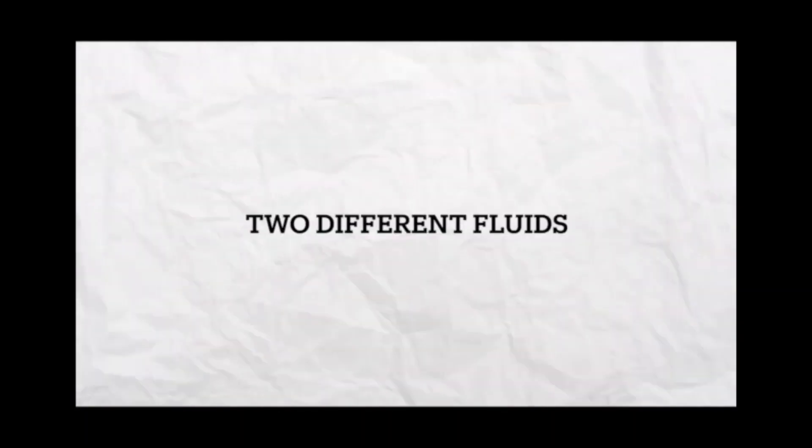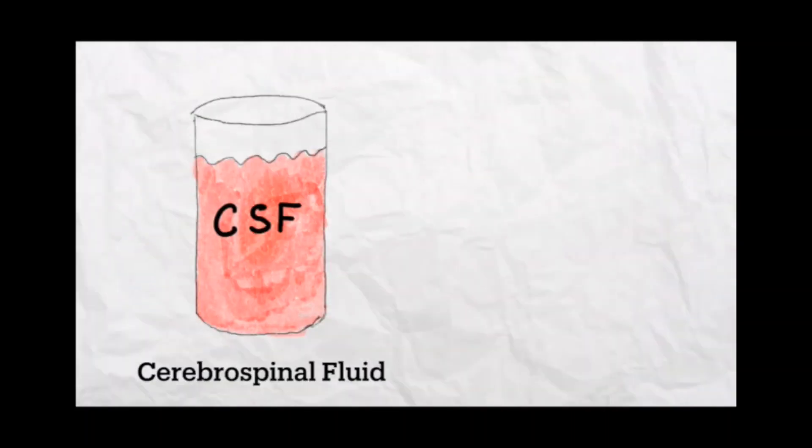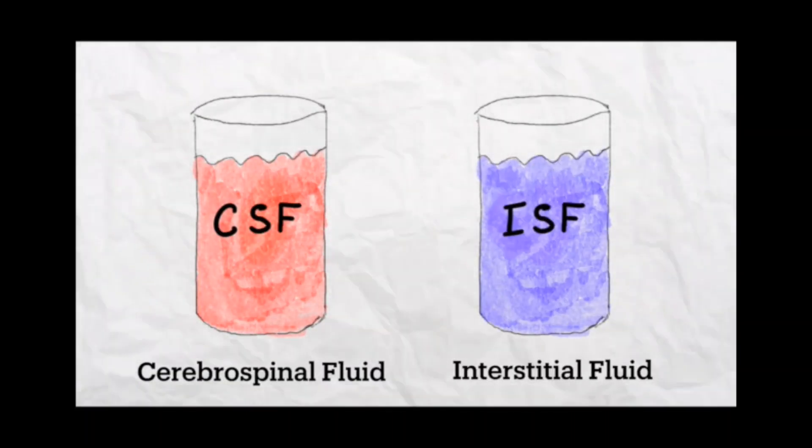More importantly, two different types of fluids that circulate in the brain are used: cerebrospinal fluid, or CSF, and interstitial fluid, or ISF.